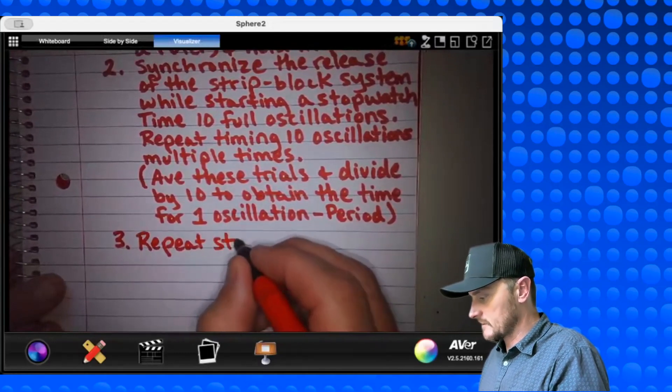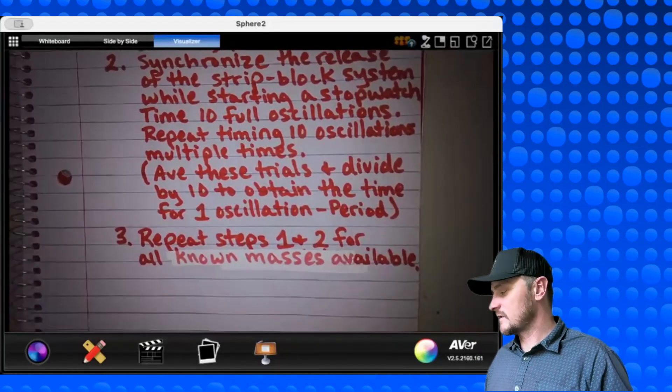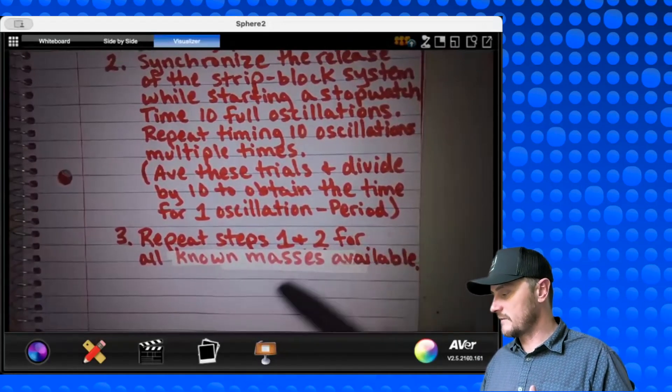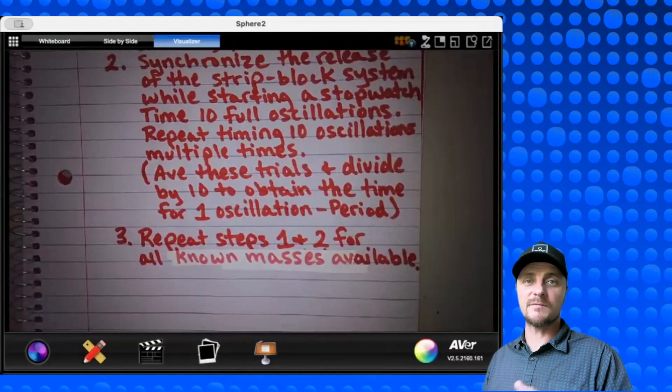That's step two. Let's go to step three. Repeat steps one and two for all known masses available. And we're just telling the reader, hey, we know the masses, we know the period. We're going to use this information in part B to graphically analyze in order to find K, the spring constant from the slope. Let's go to part B.